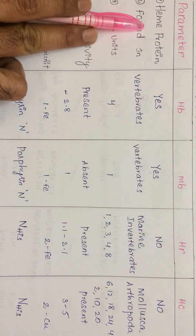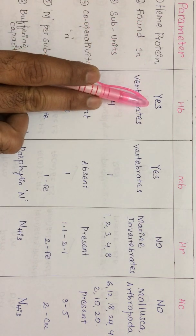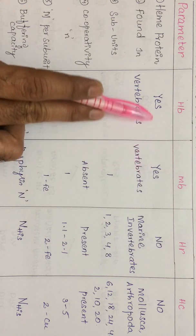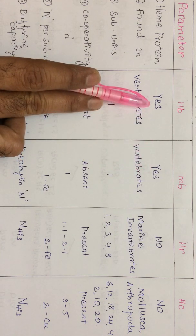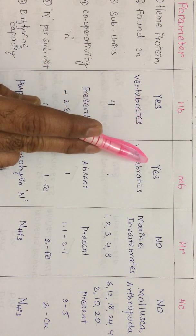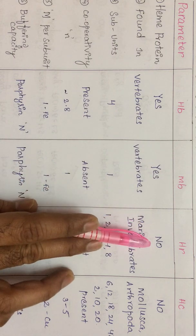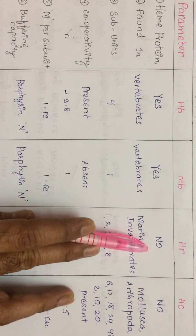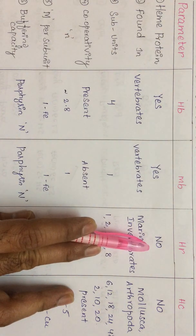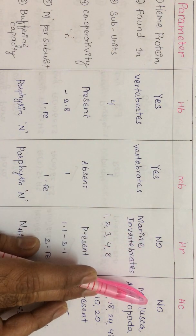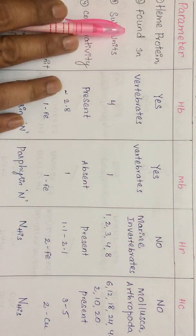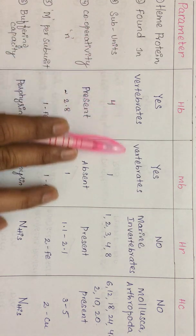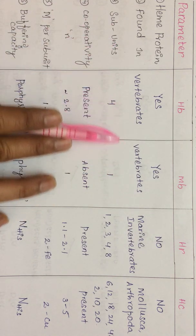The first parameter is whether they are heme proteins. In hemoglobin as well as myoglobin, iron is surrounded by porphyrin, hence we call them heme proteins. Whereas in the case of hemerythrin and hemocyanin, the metallic centers are not surrounded by porphyrin, therefore these are not heme proteins.